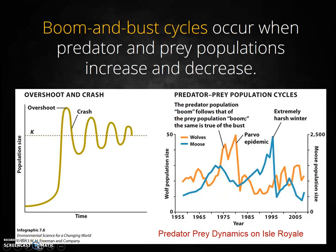Take a moment to study the predator-prey population dynamics on Isle Royale. As the prey population increases, the predator population begins an increase as well, and the predator population is able to effectively regulate the prey population, causing a decline, after which the predator population also declines. These cycles are called boom and bust cycles.